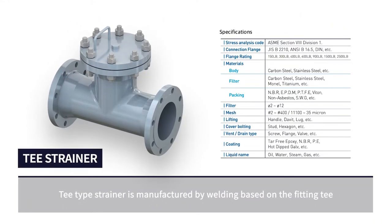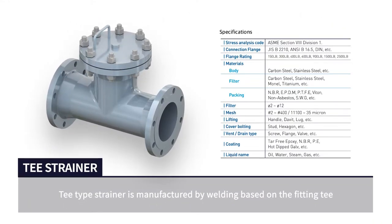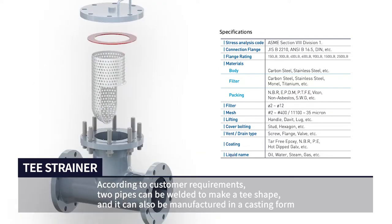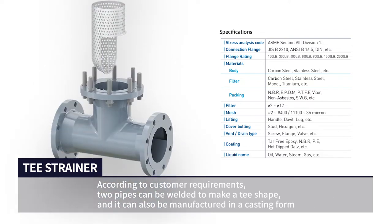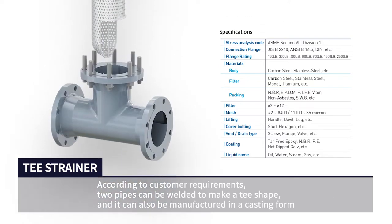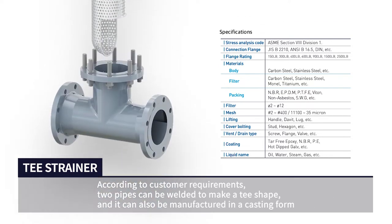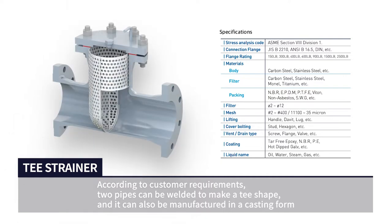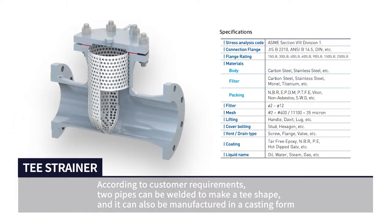T-type strainer is manufactured by welding based on the fitting T. According to customer requirements, two pipes can be welded to make a T-shape, and it can also be manufactured in a casting form.